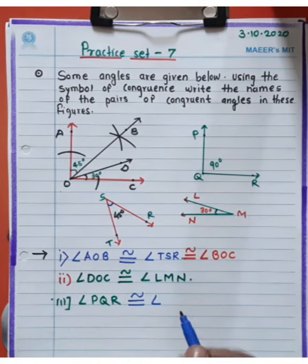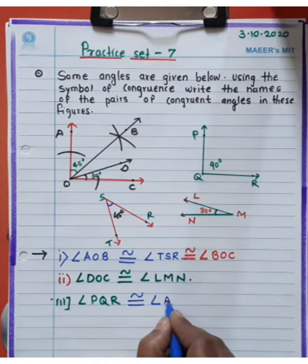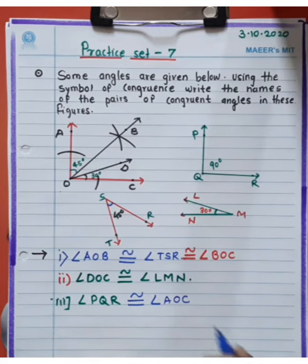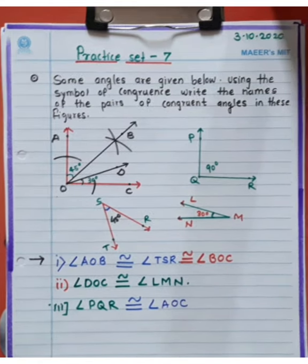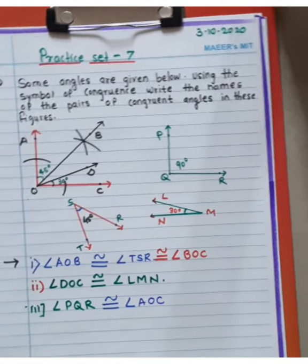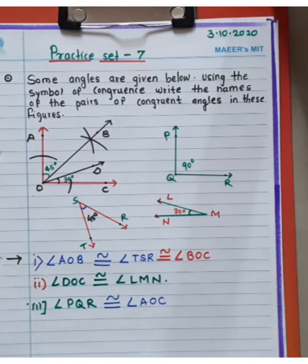Angle AOC is 90 degrees — 45 plus 45 equals 90 degrees. So angle PQR is congruent to angle AOC. Do you understand, students, how to find out the pairs of congruent angles?